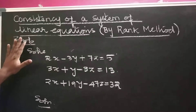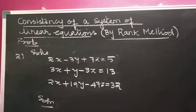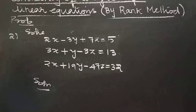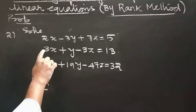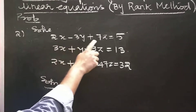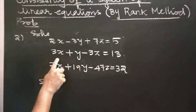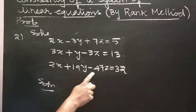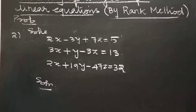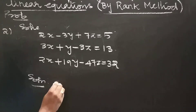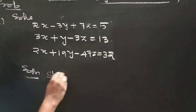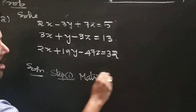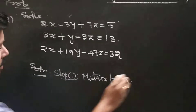Problem number 2: solve the following system of equations by Rank method. The equations are 2x minus 3y plus 7z equal to 5, 3x plus y minus 3z equal to 13, and 2x plus 19y minus 47z equal to 32. First step: write down the matrix form Ax equal to b.